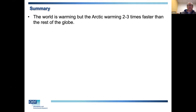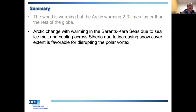In summary: the world is warming, the Arctic is warming two or three times faster. The sea ice melt has been focused in the Barents-Kara Sea, giving warming across that region, and cooling across Siberia with increasing snow cover. As I've been arguing, this is favorable for disrupting the polar vortex.